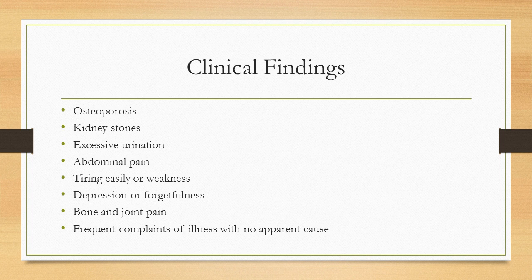Clinical findings of hyperparathyroidism are osteoporosis, kidney stones, excessive urination, abdominal pain, tiring easily or weakness, depression or forgetfulness, bone and joint pain, or frequent complaints of illness with no apparent cause.